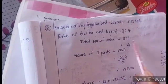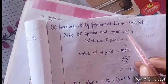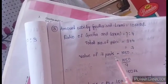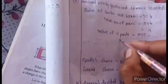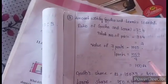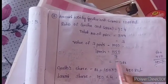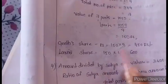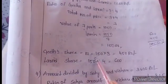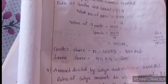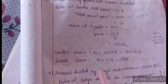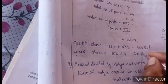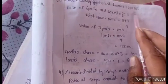The value of 7 parts is equal to 1,050 rupees. So 1 part equals 1,050 divided by 7, which is 150 rupees. Gita's share: ratio 3, so 3 into 150 equals 450 rupees. Lakshmi's share: ratio 4, so 4 into 150 equals 600 rupees. Adding 450 plus 600 gives 1,050 rupees.